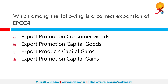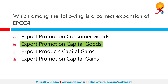Which among the following is the correct expansion of EPCG? EPCG is the Export Promotion Capital Goods Scheme, which helps in facilitating the import of capital goods for manufacturing quality goods and to augment the competitiveness of India's export. The EPCG scheme enables the import of capital goods used in pre-production, production, and post-production without payment of custom duties.